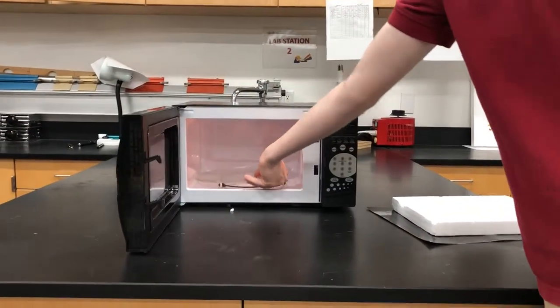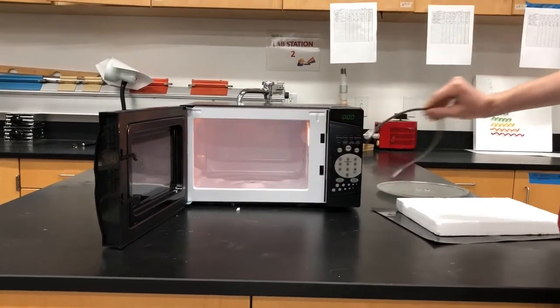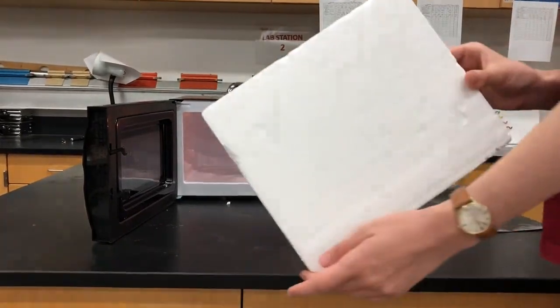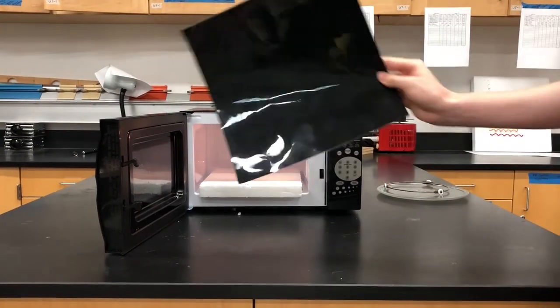The first step is to take out this rotating plate. Then put in the styrofoam pad. And lastly, the heat-detecting crystal sheet.